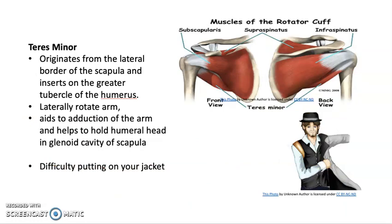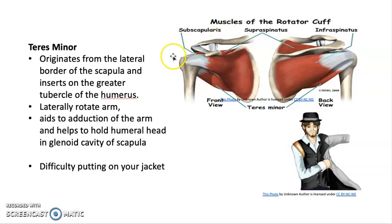Teres minor originates from the lateral border of the scapula and inserts on the greater tubercle of the humerus. It laterally rotates the arm and aids in adduction of the arm — meaning it brings the arm closer to the body — and helps hold the humeral head in the glenoid cavity of the scapula. If you injure teres minor, you may have difficulty putting your hand behind your back.